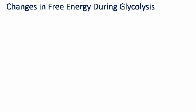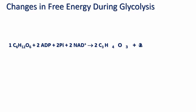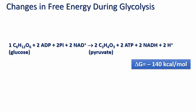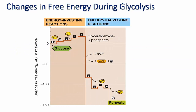The overall reaction of glycolysis is: 1 glucose + 2 ADP + 2 Pi + 2 NAD+ give 2 pyruvate + 2 ATP + 2 NADH + 2 H+. The net reaction is exergonic, resulting in a delta G of approximately negative 140 kilocalories per mole of glucose. When we look at the change in free energy during glycolysis, there is an initial increase corresponding to the energy-investing stage, followed by a sharp decrease due to the oxidation of G3P, and further smaller decreases from the two substrate-level phosphorylation reactions in the energy-harvesting stage.